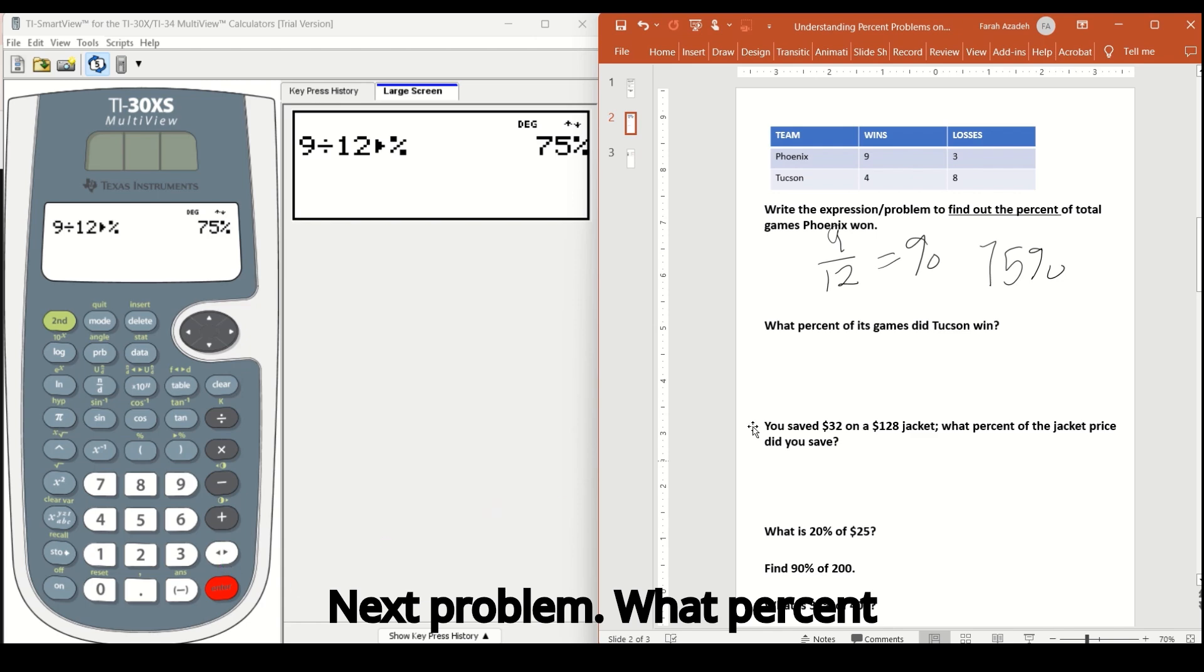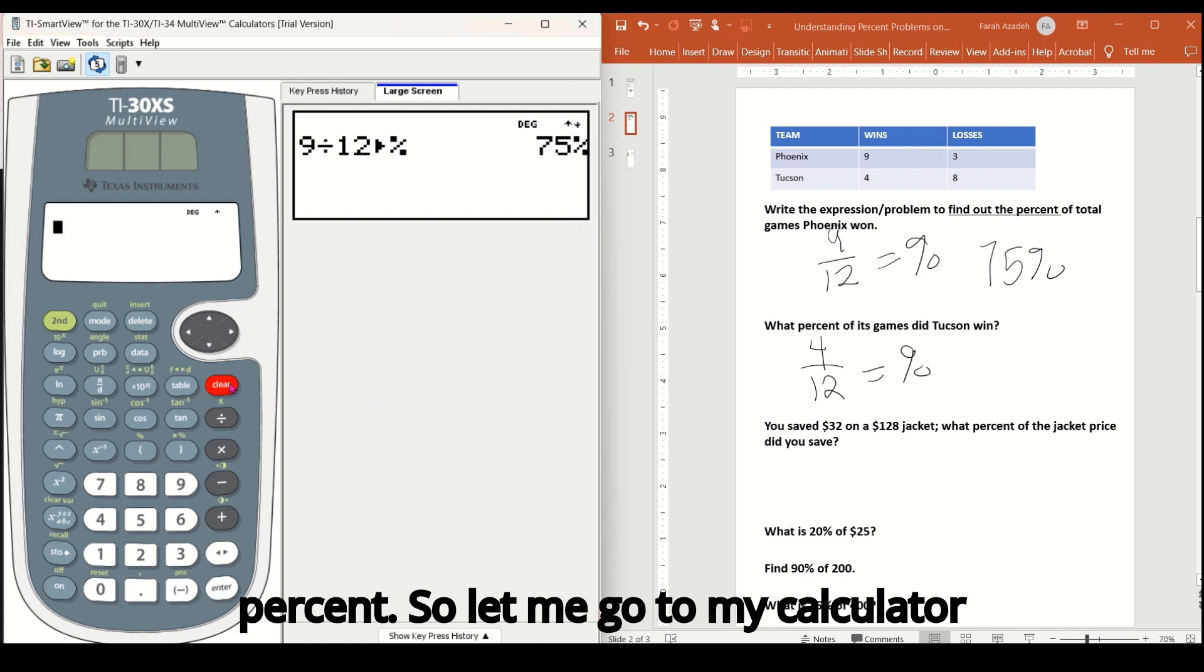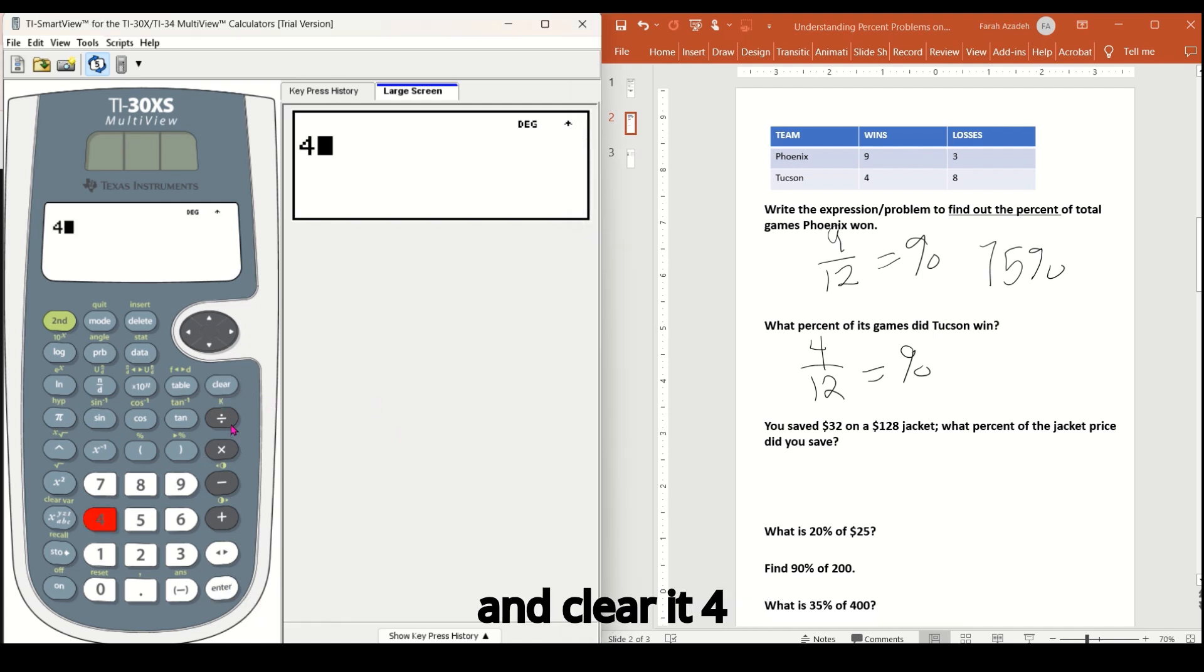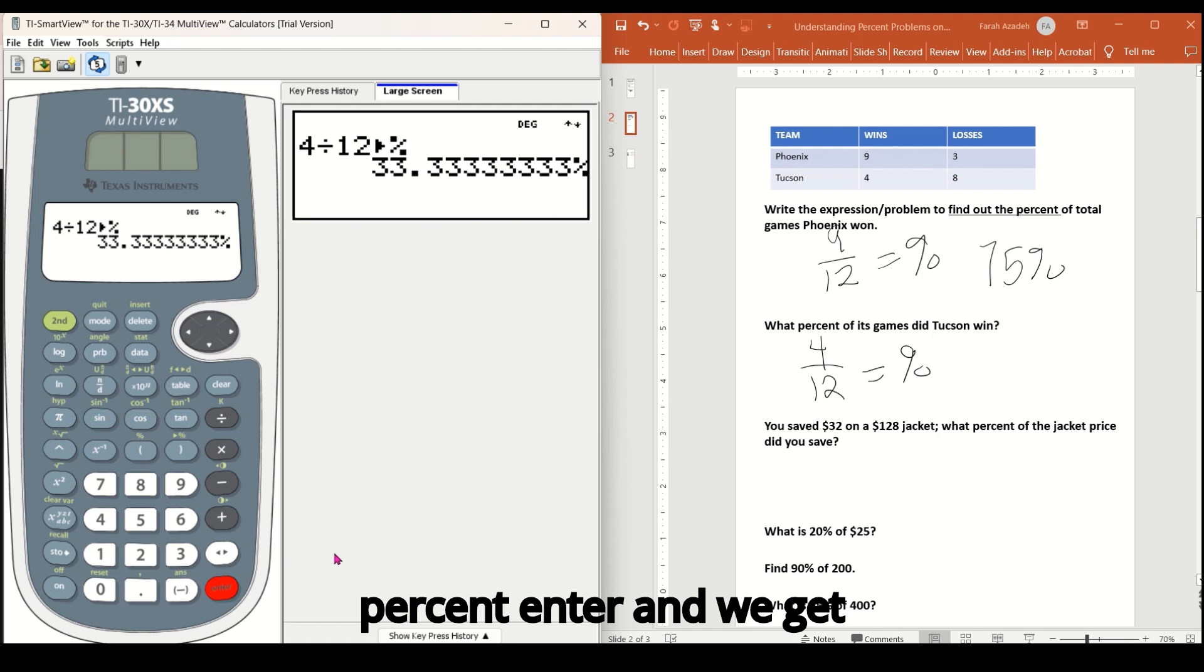What percent of its games did Tucson win? Well, I know my base is 12. Tucson won four games. So four divided by 12. So four divided by 12 will give me my percent. So let me go to my calculator and clear it four divided by 12 seconds. Give me my answer as a percent enter and we get 33.3 repeating.